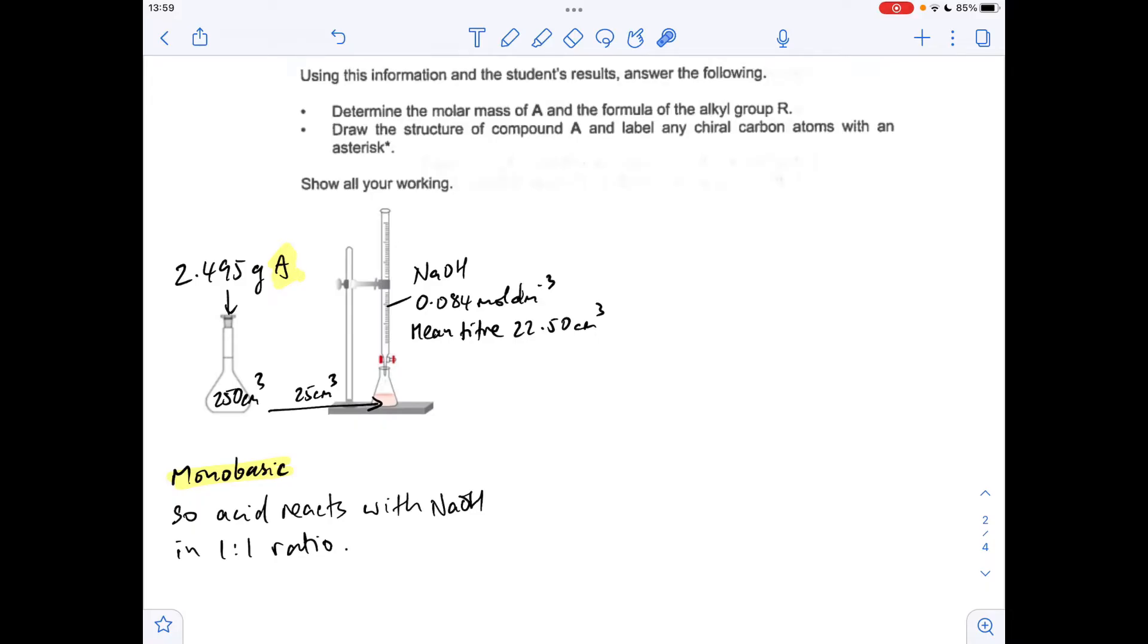So they've dissolved that in 250 cm³. They've taken a tenth out, 25 cm³ gone into the conical flask, and they've titrated it against the sodium hydroxide. Those titration results we worked out, the mean titre was 22.50, and the concentration of the alkali is that.